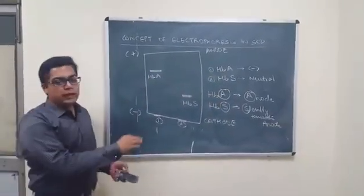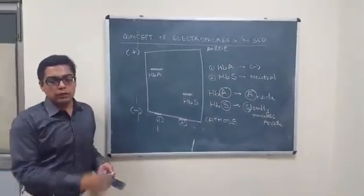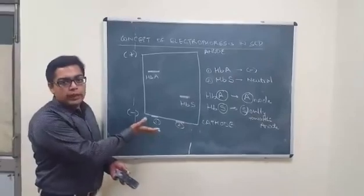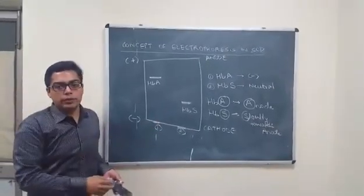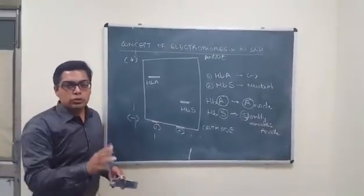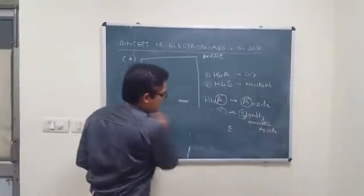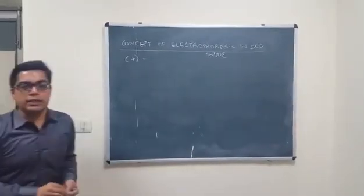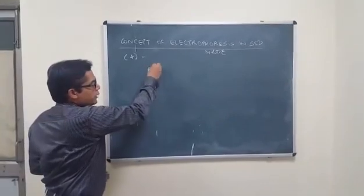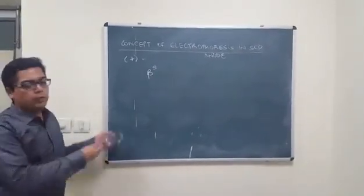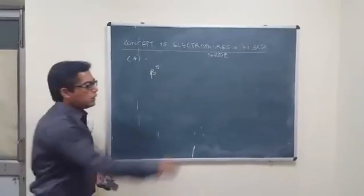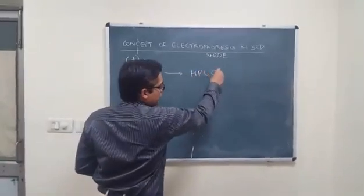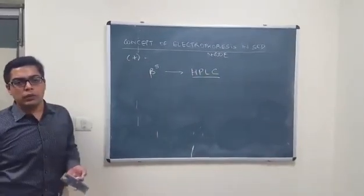Remembering the point mutation and the change in amino acid helps us understand the reason for abnormal hemoglobin formation and also helps make a diagnosis using hemoglobin electrophoresis. Do remember that what we are detecting is the presence of the abnormal beta-globin chain, which is a protein, and proteins can be detected not only by hemoglobin electrophoresis but also by high-performance liquid chromatography (HPLC).